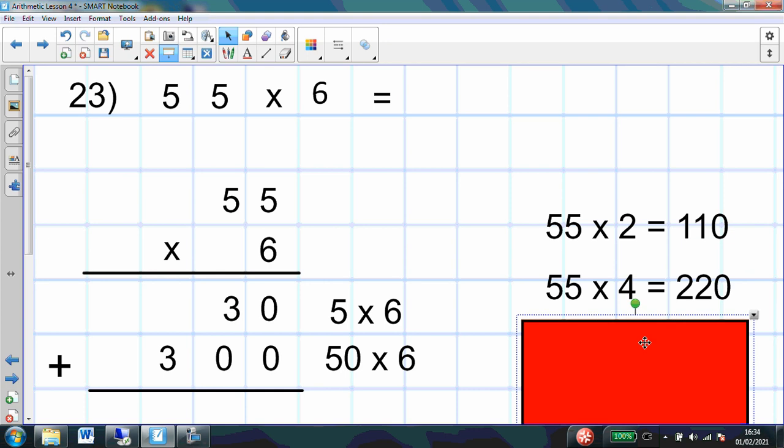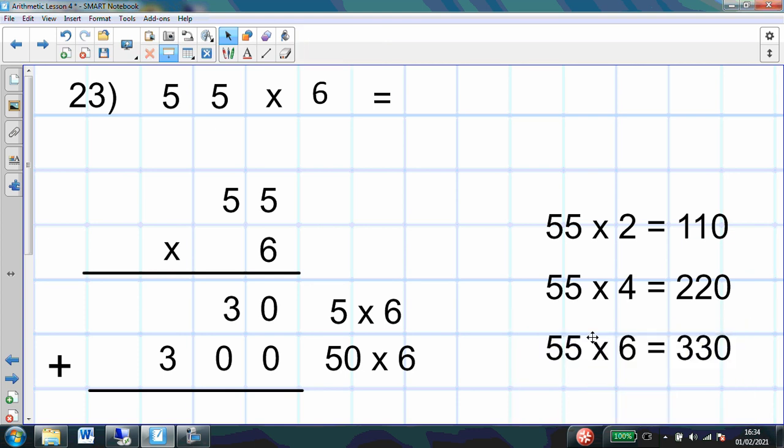Well, I knew that if 55 times 2 was 110, 55 times 4 must be 220, sorry. I just doubled it. So in that case, surely 55 times 6, we look at the pattern, must be 330. So that's how I solved that problem in my head.